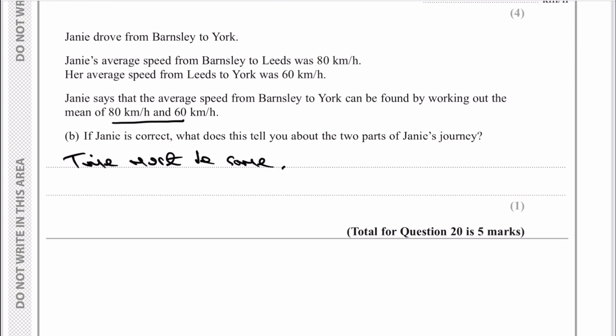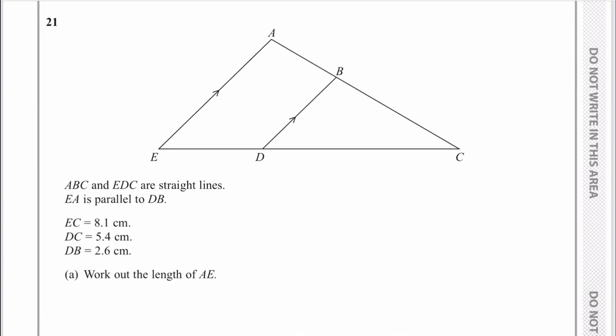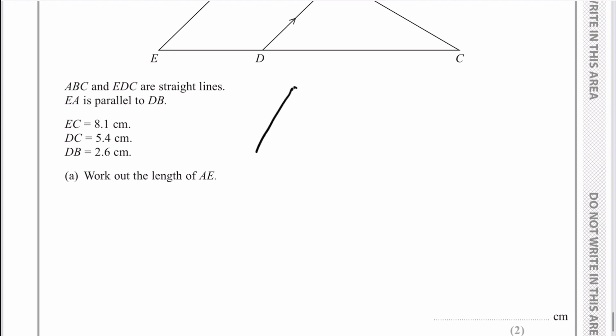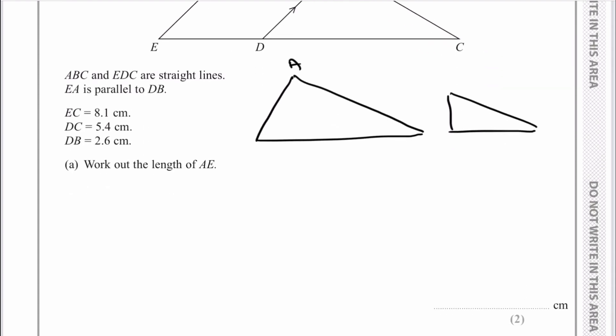Let's move on to question 21, which is similar shapes, so things are getting more challenging towards the end. We've got about three or four questions to go. With these types of questions, I normally separate everything up. I'm going to draw two separate triangles: one I'll label AEC and the other BDC. This allows me to put in the information I've been given. E to C is 8.1 and D to C is 5.4.